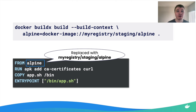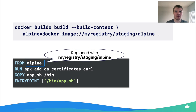This last case is important when your Dockerfile uses a release version of an image but you want to build with a staging version instead without modifying the Dockerfile itself. For example, you can define a build context so that whenever the builder sees a FROM alpine command, it uses the staging version of Alpine instead.